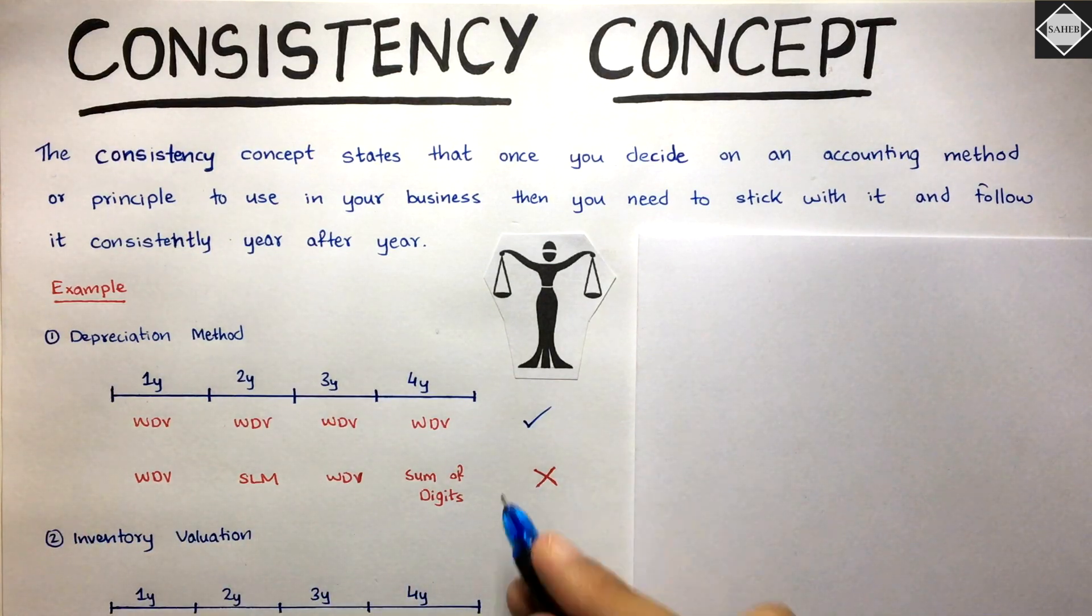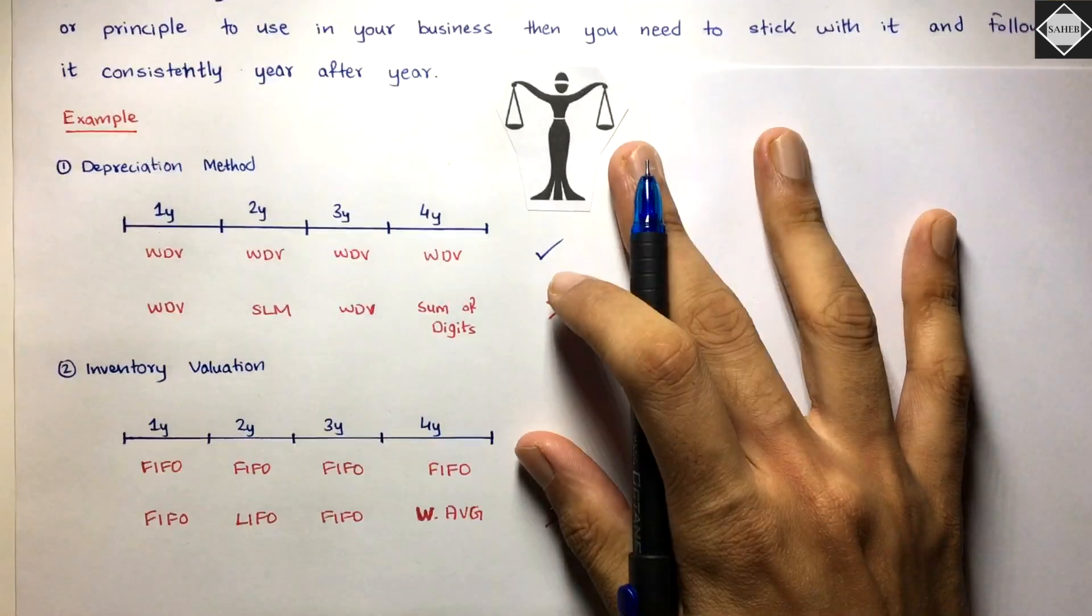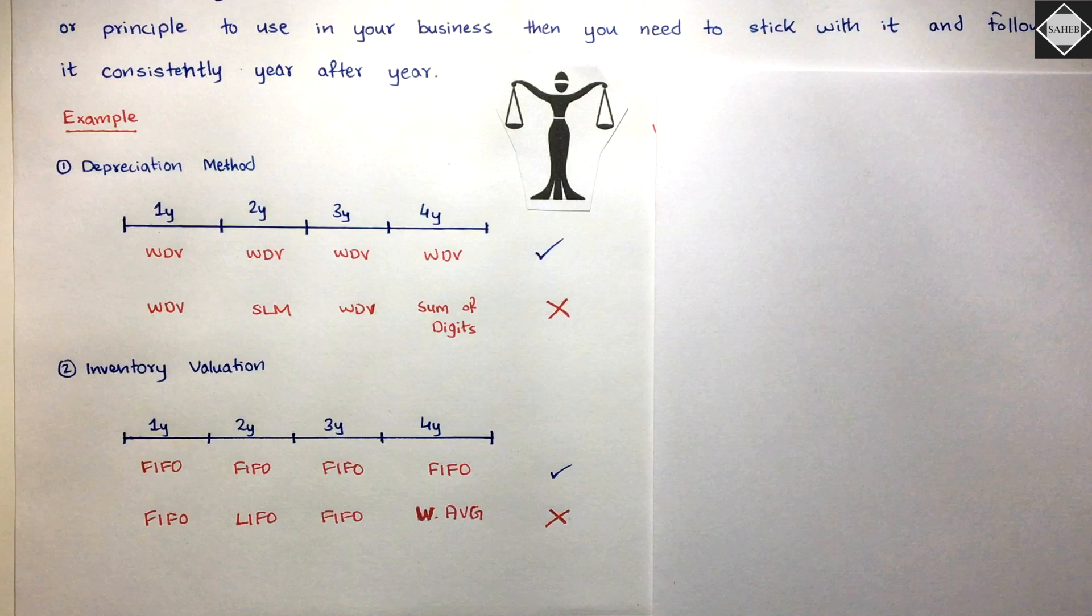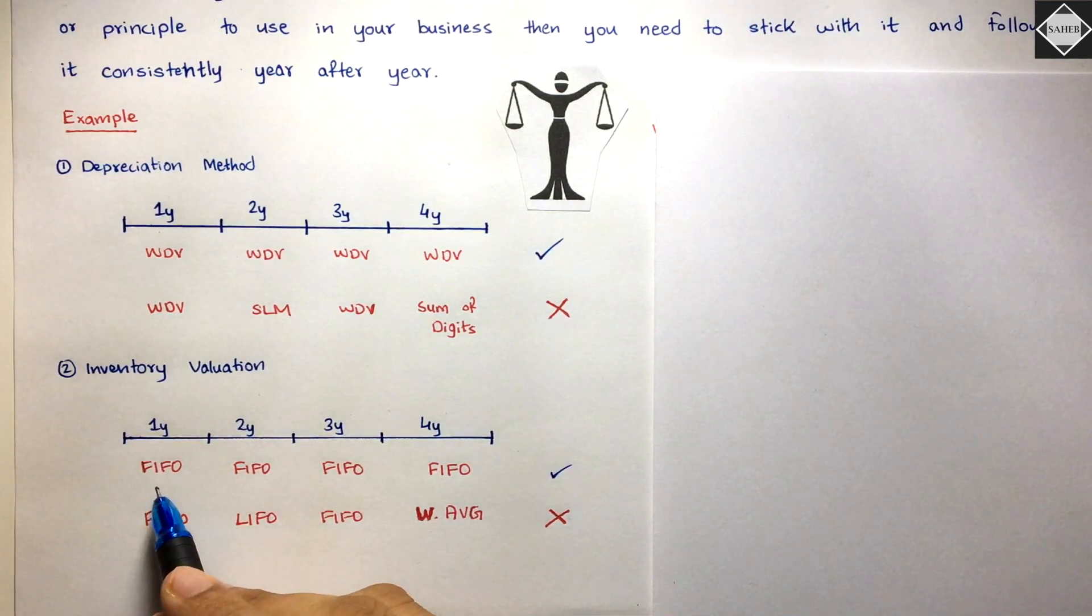Here you are not following the consistency concept. Same with inventory valuation - we have different methods like FIFO, LIFO, weighted average, and simple average. If you are following FIFO in the first year, you are supposed to follow FIFO in the following years also. But if you're doing FIFO, LIFO, FIFO, weighted average, that's wrong.